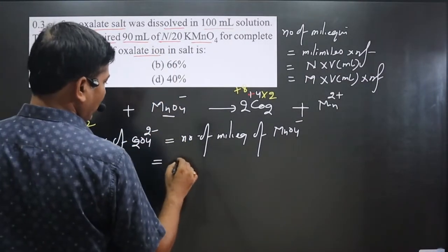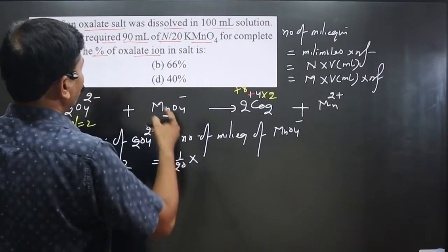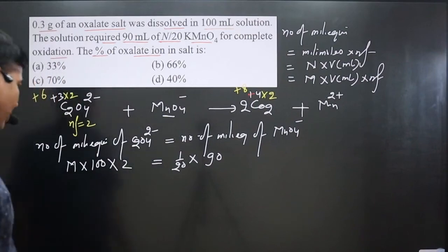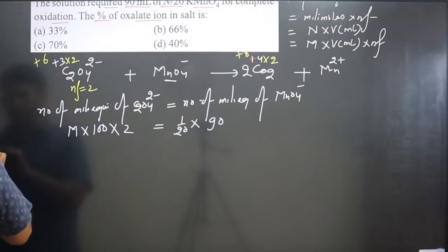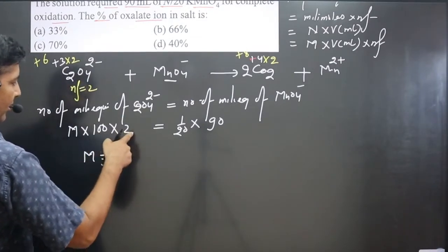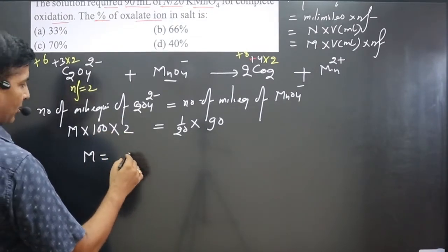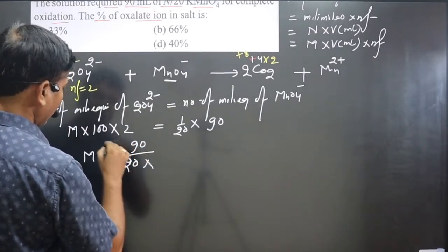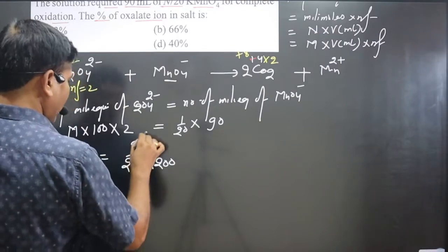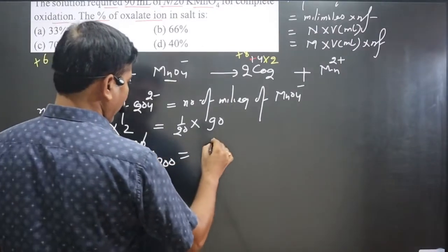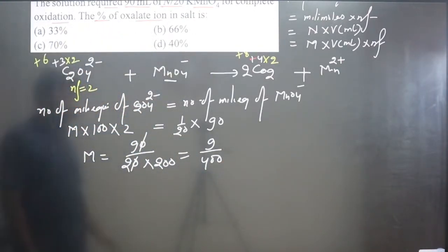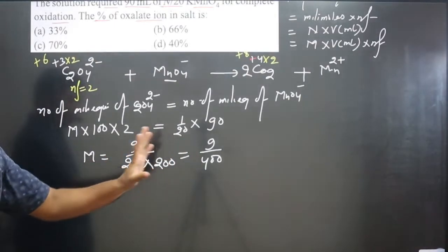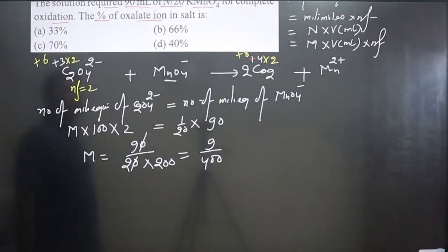Normality is 1/20 multiplied by volume 90 mL. Simplifying: 90/20 divided by 200 gives 9/400. So the molarity of oxalate ion is 9/400. The volume of the oxalate salt solution is 100 mL. With molarity known and volume known, moles of oxalate ion can be calculated.